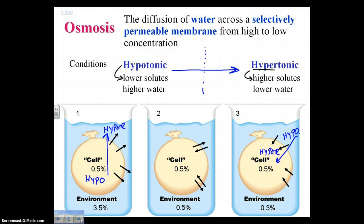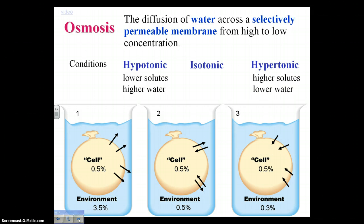Beaker number two has an equal environment on both sides. We have a term for that — isotonic. In isotonic situations, water is moving in both directions at the same rate, so isotonic means equal on both sides.